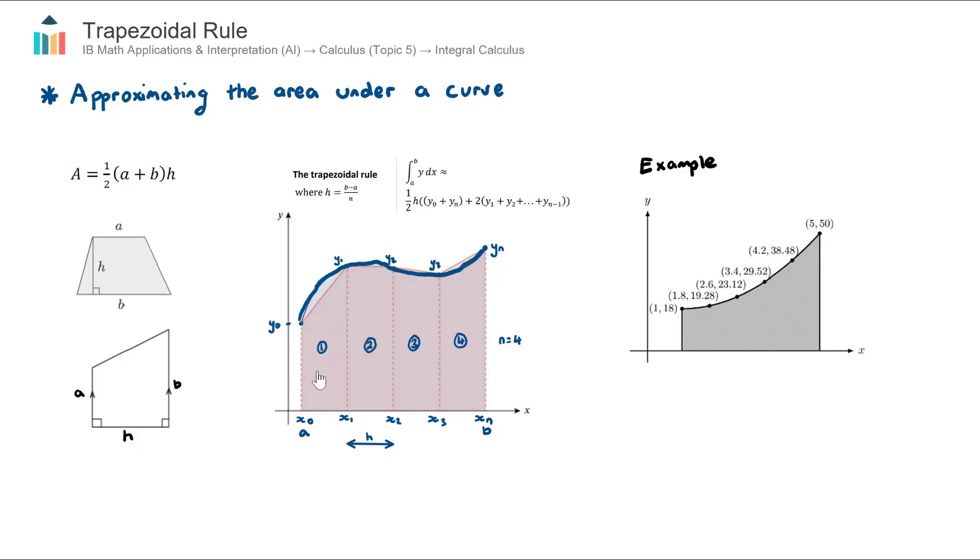Now instead of adding up all of the areas of the trapezoids we actually have a rule that adds them all up in one go and this is the formula here and I'll circle this. This is an important formula.